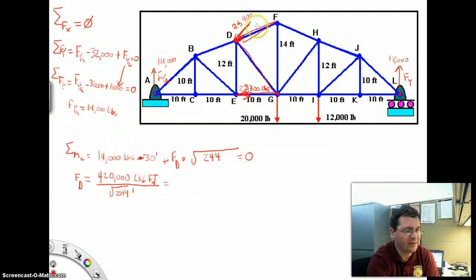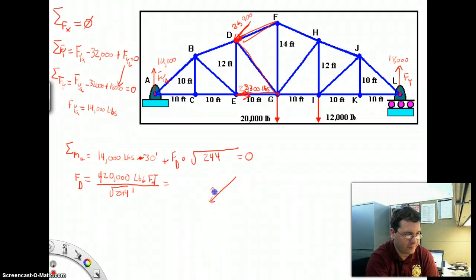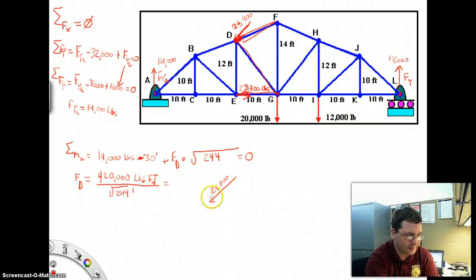Now understand, that is not the force in member F. That's the force in the member perpendicular. In fact, we could redraw this triangle here. Let's redraw it a little bit larger. So there's this 26,900 pound force that I found here.